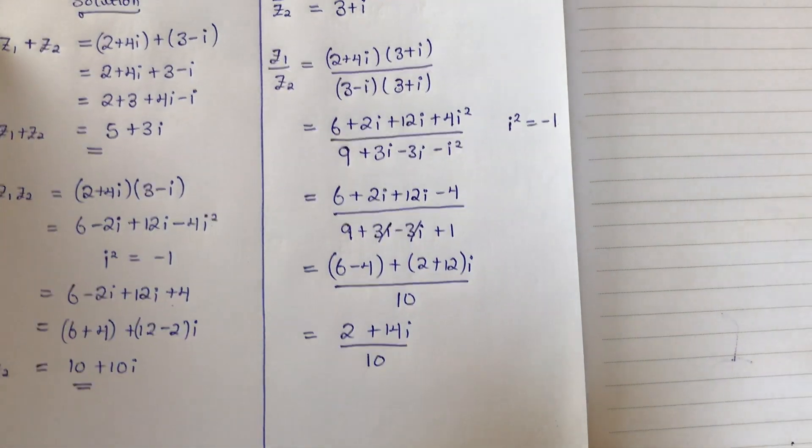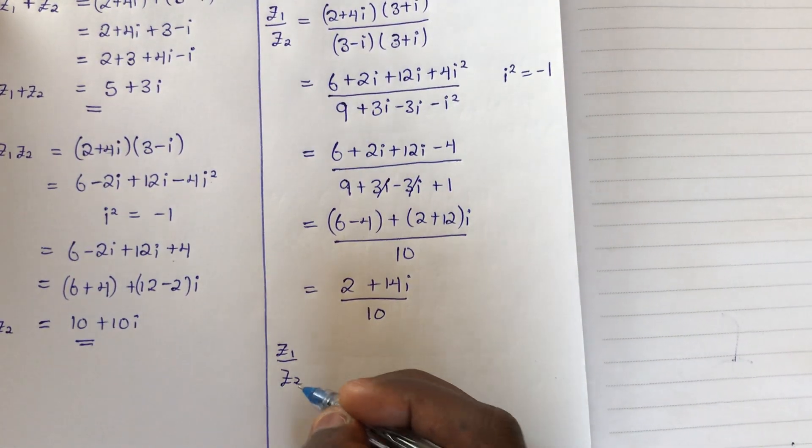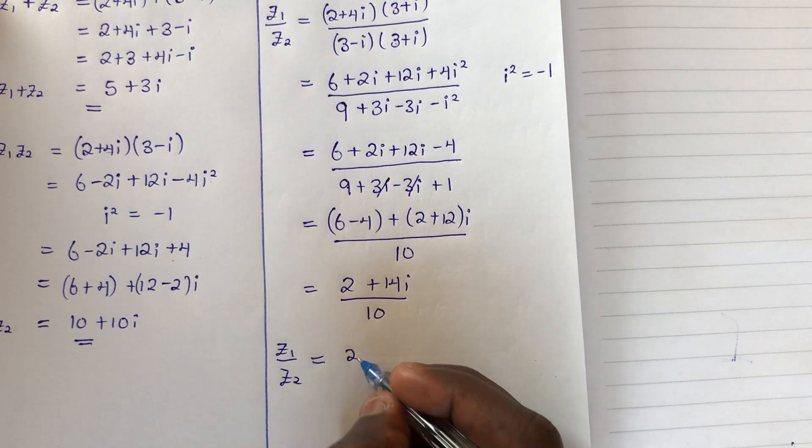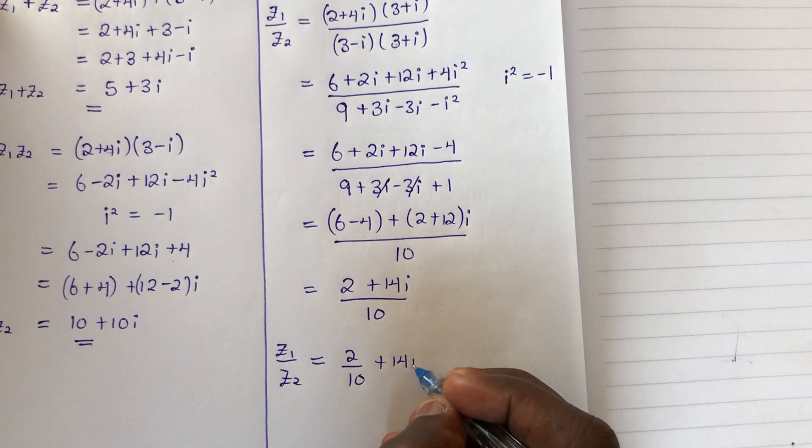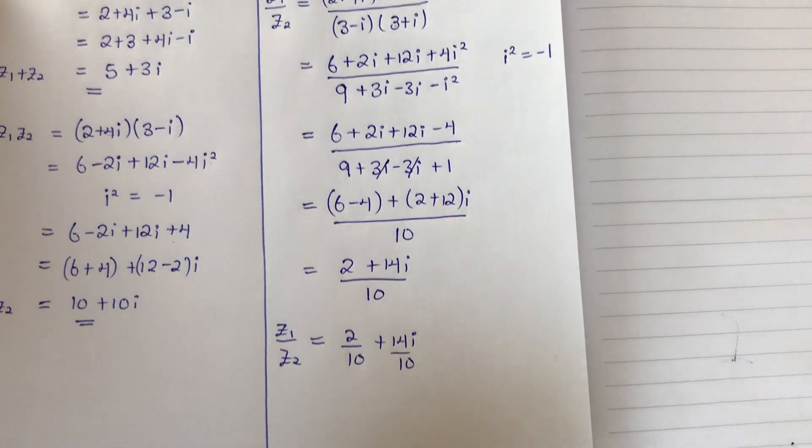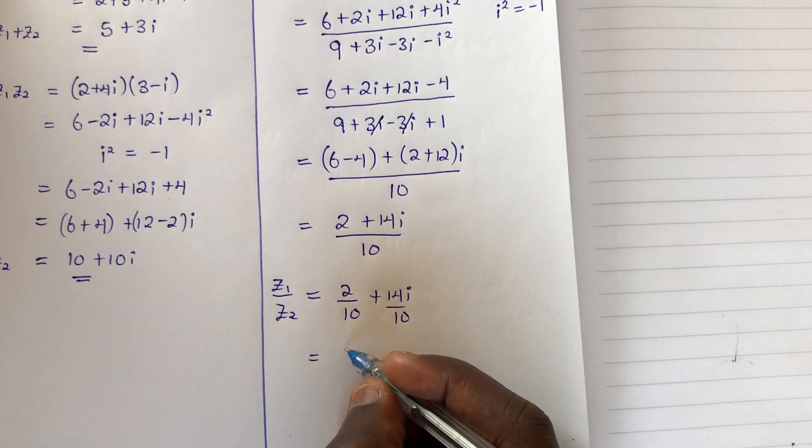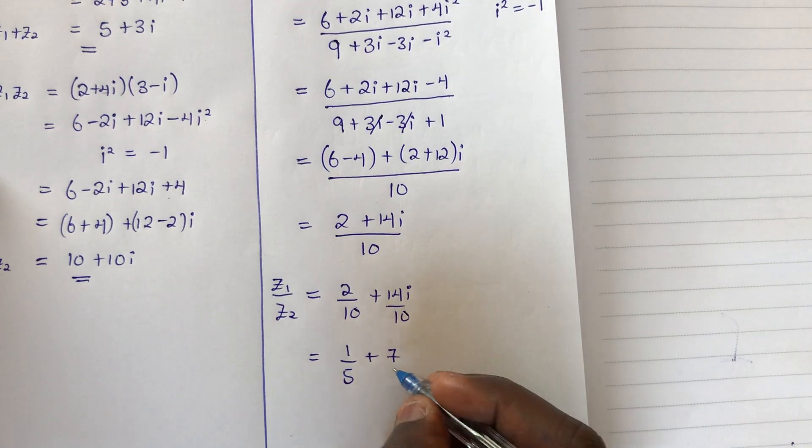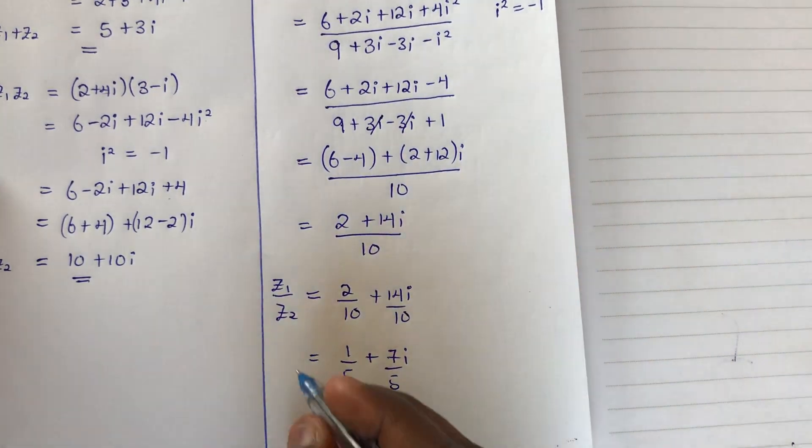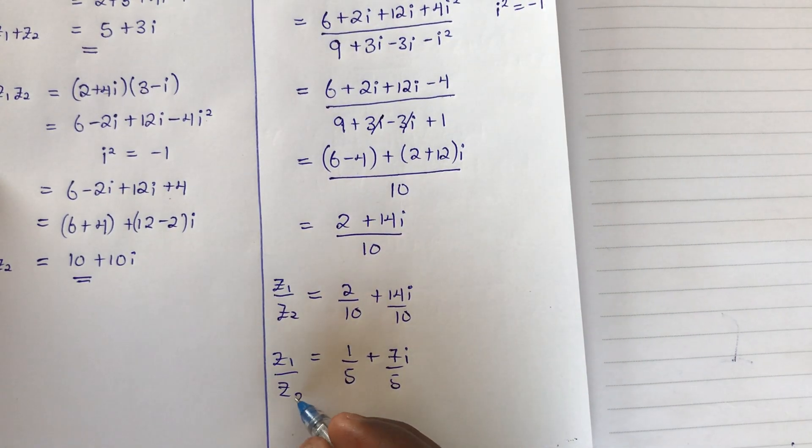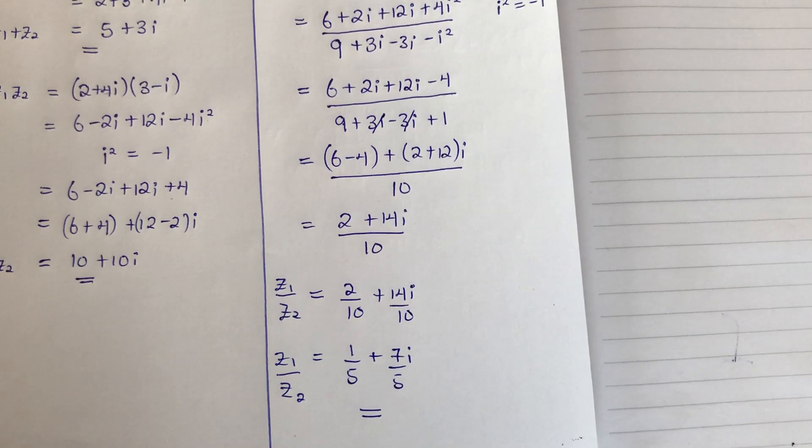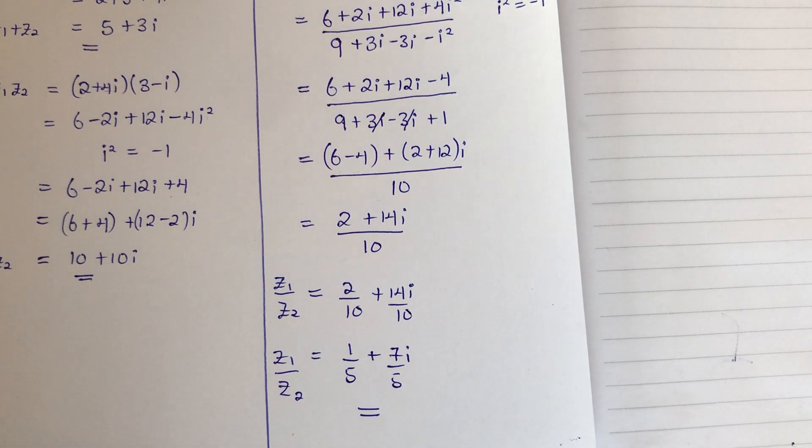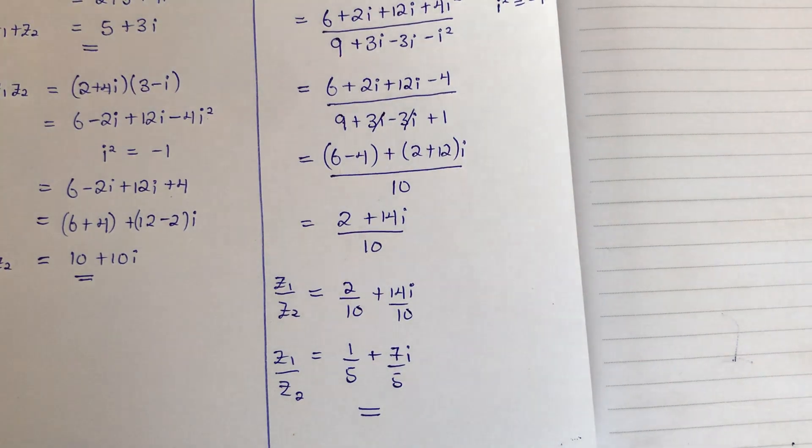So z1/z2 = (2 + 14i)/10 = 2/10 + 14i/10. Breaking this down: z1/z2 = 1/5 + 7i/5. This is our final result. That's it for this example - I'll be taking other examples, so stay tuned. If you haven't subscribed to this channel, kindly do. My name is Daniel and I hope this video has been helpful.